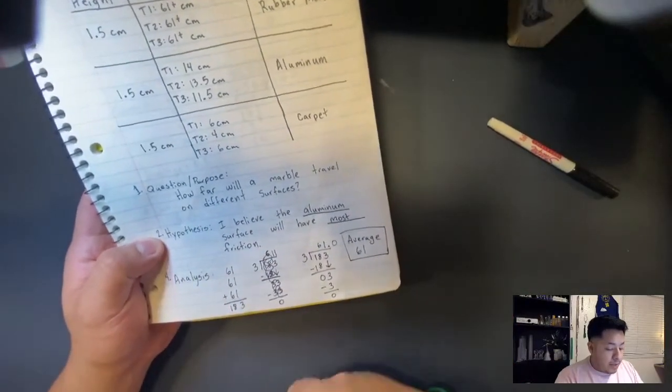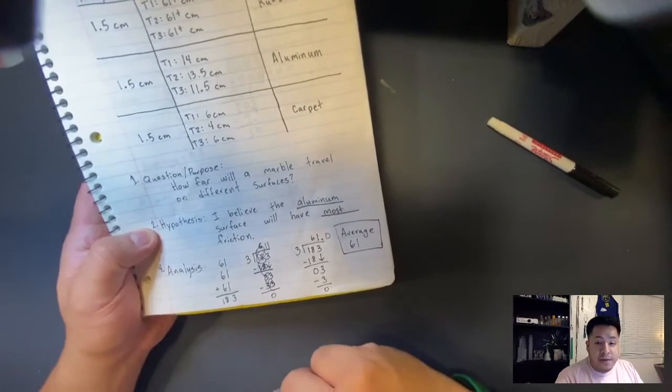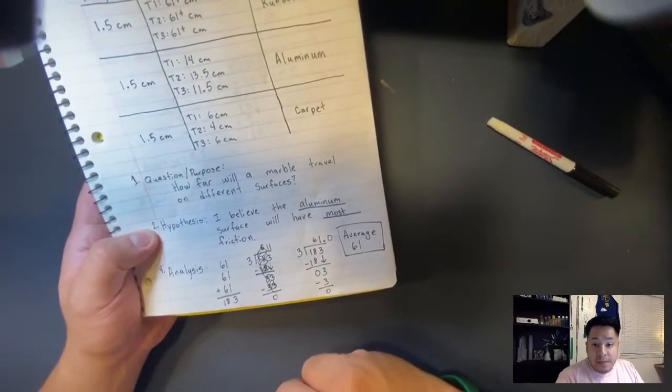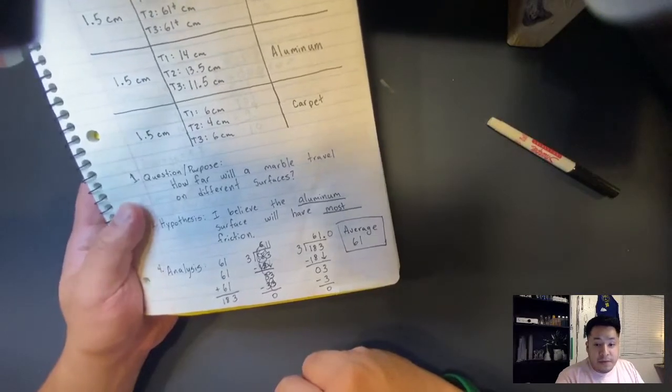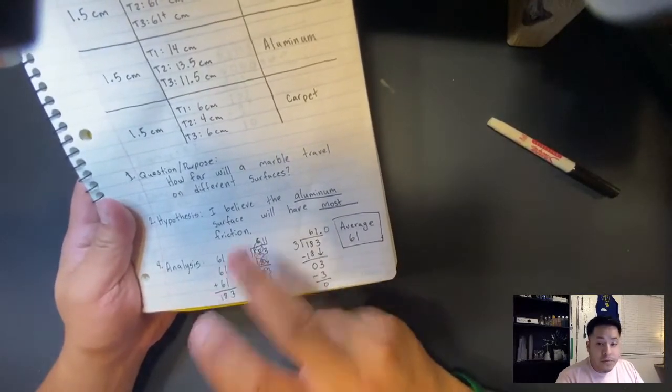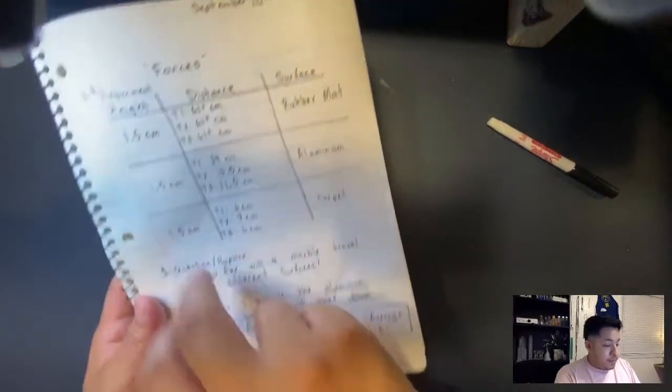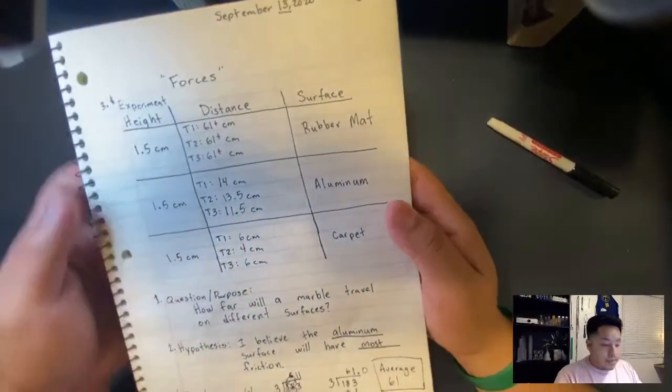Hypothesis, I believe that the aluminum surface will have the most friction. So that is my hypothesis. It does not have to be true. It does not have to be false. It is just your opinion, what you think, what you believe, what you are assuming. Number three, experiment. So go ahead, let's begin the experiment.